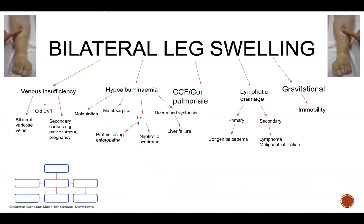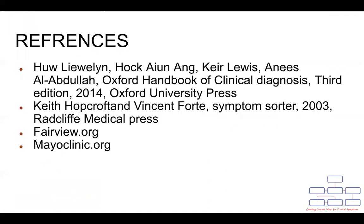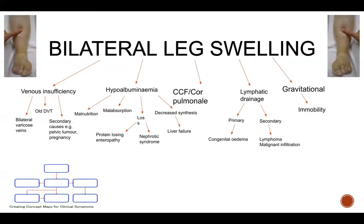When taking the history, always ask about shortness of breath on exertion and listen for altered breath sounds, which may indicate heart failure and/or cor pulmonale. In the elderly, the cause is often multifactorial and immobility itself plays a major role. Lower limb swelling tends to be less common in younger patients, but if it is present, it is likely to indicate more serious pathology.